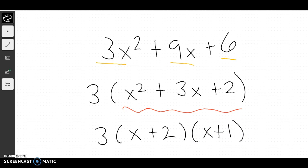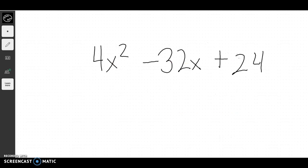Let's try another example. Again, for this one, I'm going to look across and see what numbers they all have in common: 4, negative 32, and 24. Oh, they all have 4 in common. So I'm going to take out a 4, and I'm going to get x squared minus 8x plus 6.